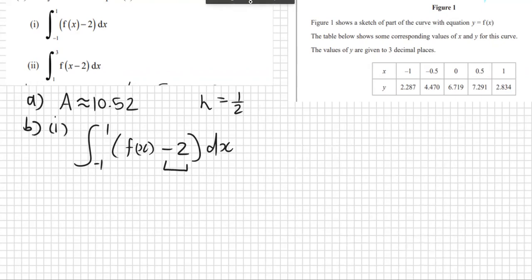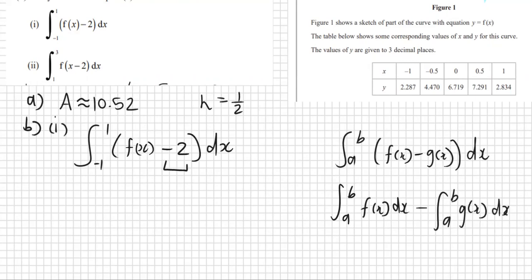So let's take a look. We can rearrange this a little bit to make it a bit easier. We know that the integral of A to B of F of X minus G of X must be equal to the integral from A to B of F of X minus the integral from the same A to B of G of X dx. So we can rearrange our work here to get the same answer.